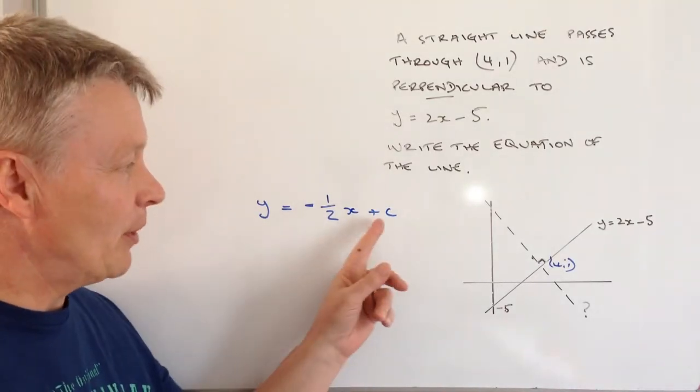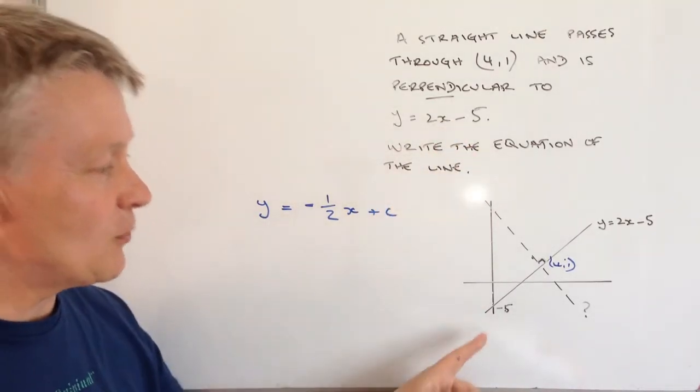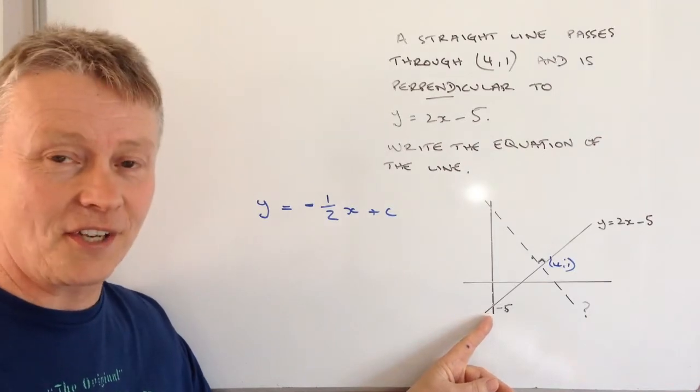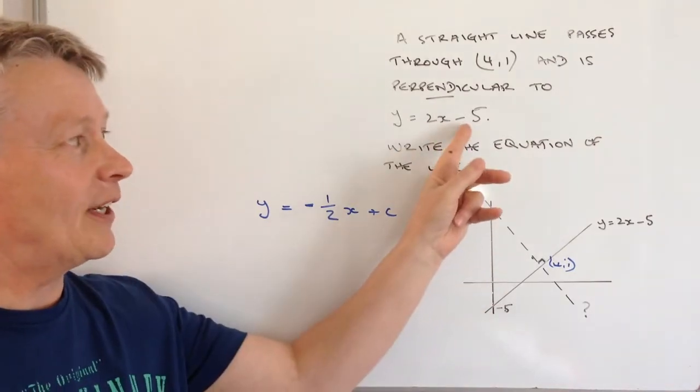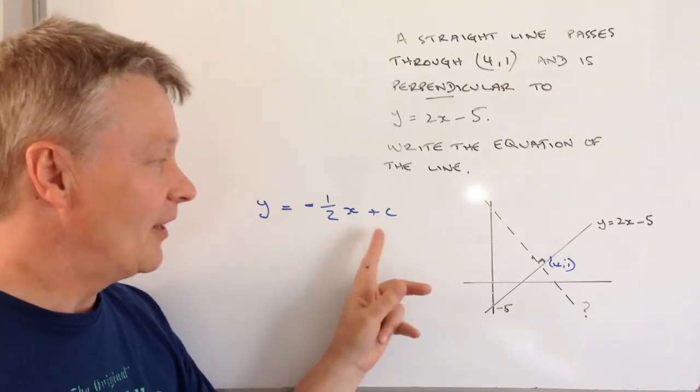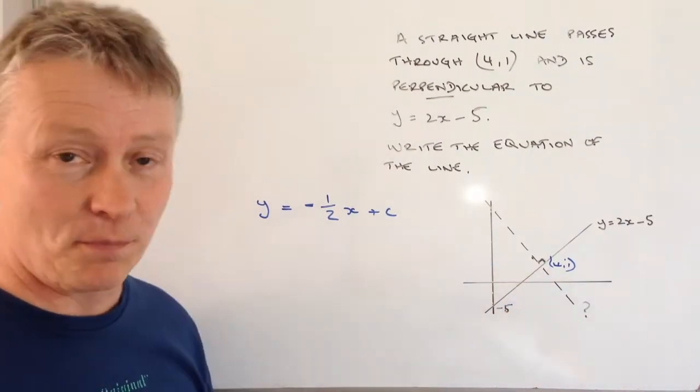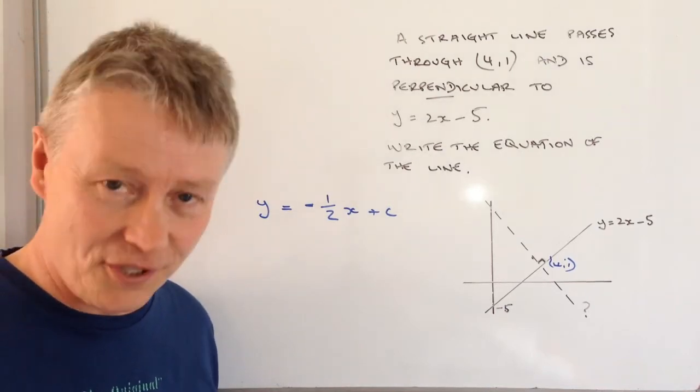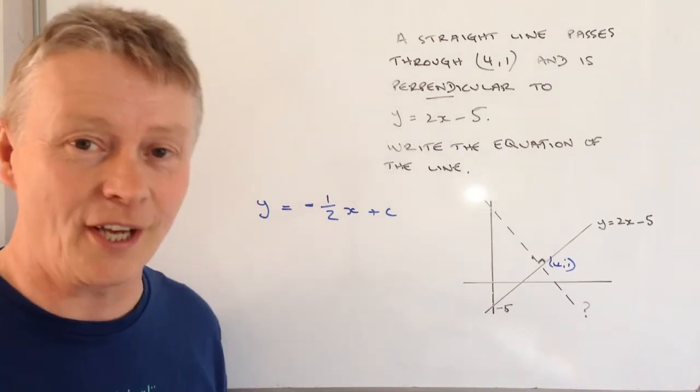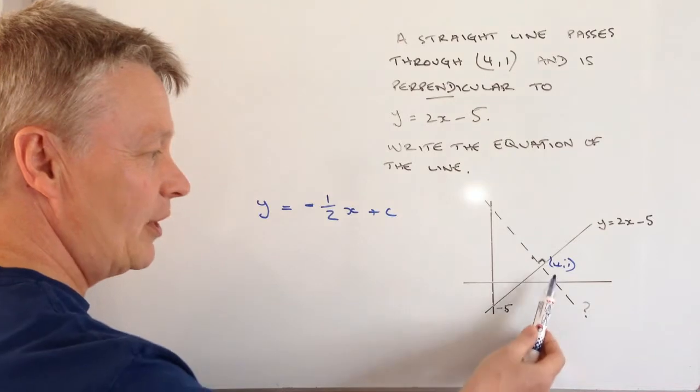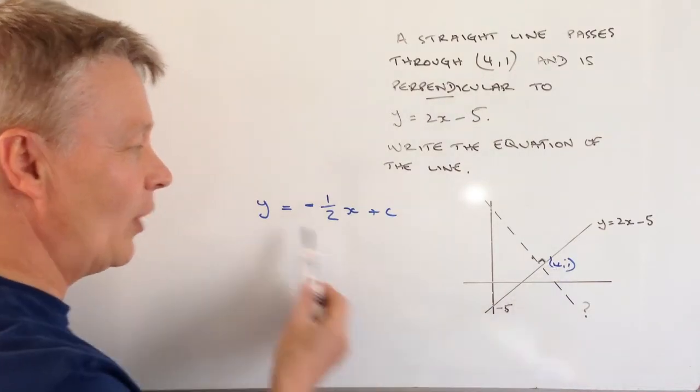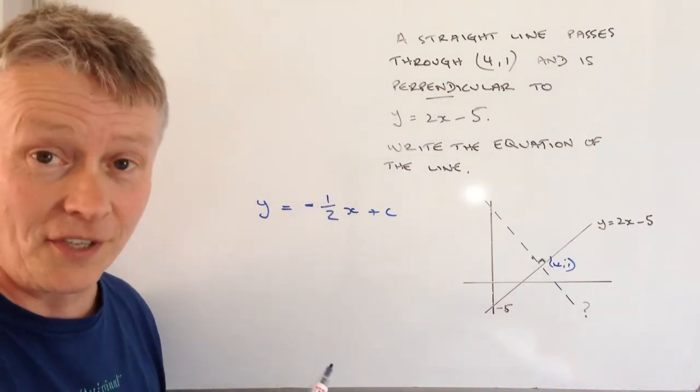Now what we normally mean by c is this bit here - it's where it cuts the y-axis. We know where it cuts the y-axis in this one, it cuts it at -5. In this one, we don't. But we do know that it passes through this point. So we can use this information to work out the value of c. If we know the value of x and the value of y, we can just plug it into this equation.